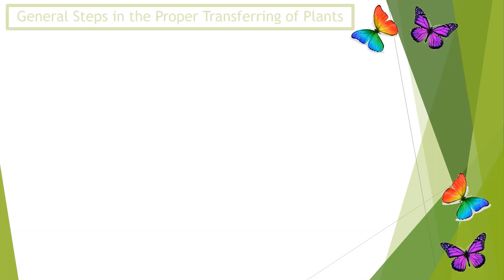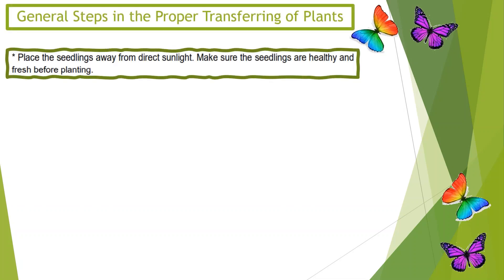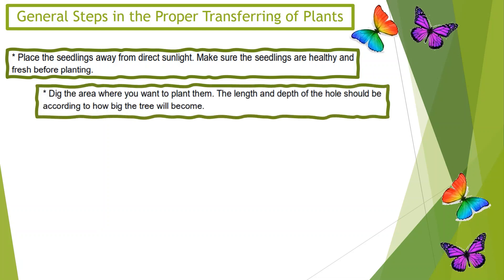Now let's talk about the general steps in the proper transferring of plants. Step 1: Place the seedlings away from direct sunlight. Make sure the seedlings are healthy and fresh before planting. Step 2: Take the area where you want to plant them. The length and depth of the hole should be according to how big the tree will become.